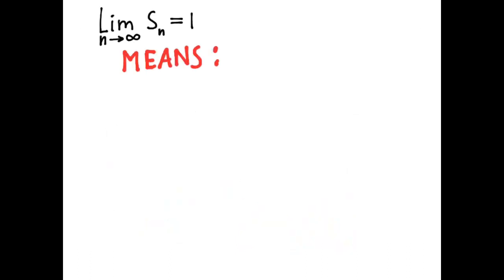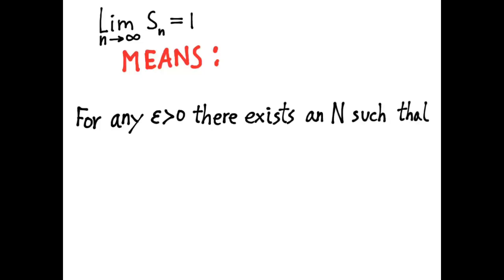The statement, limit as N approaches infinity of S sub N equals 1 means for any positive epsilon, no matter how small, there exists a value of N such that the distance between S sub N and 1 is smaller than epsilon whenever little n is greater than or equal to big N. So that means everywhere to the right of some particular number, we will be within the envelope. No matter how small an epsilon you pick, no matter how small an envelope you pick, there will always be a place where the sequence goes inside the envelope and stays there forever. And that's the first idea of the definition of a limit.